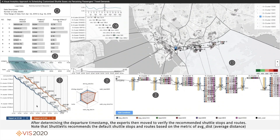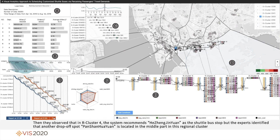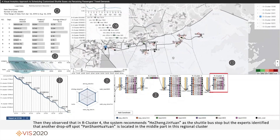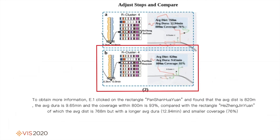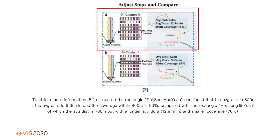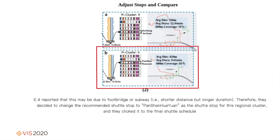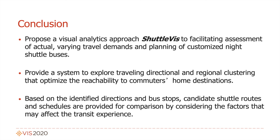After determining the departure timestamp, the experts moved to verify the recommended shuttle stops and routes. The system recommends default shuttle stops and routes based on the metric of average distance. They observed that in R-Cluster 4, the system recommended Hizhangzhen Yuan as the shuttle bus stop, but the experts identified that another drop-off spot, Panshan Huayuan, is located in the middle part of this regional cluster. Expert 1 clicked on Panshan Huayuan and found its average distance is 820 meters, average duration 9.65 minutes, and coverage within 800 meters is 93%, compared with Hizhangzhen Yuan which has an average distance of 768 meters but a longer average duration of 12.94 minutes and smaller coverage of 76%. Expert 4 noted this may be due to a footbridge or subway — shorter distance but longer duration. Therefore, they decided to change the recommended shuttle stop to Panshan Huayuan for this regional cluster and added it to the final shuttle schedule.